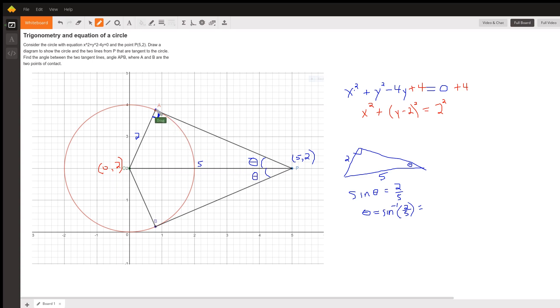You're asked to find the measure of angle APB, which is this angle. All we have to do is double whatever answer you get.